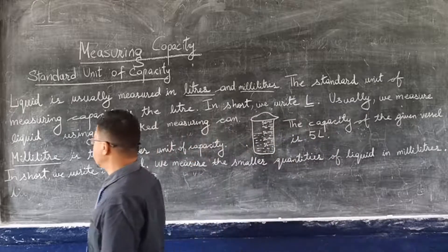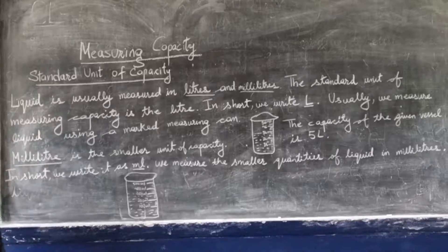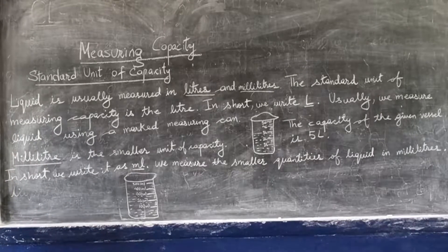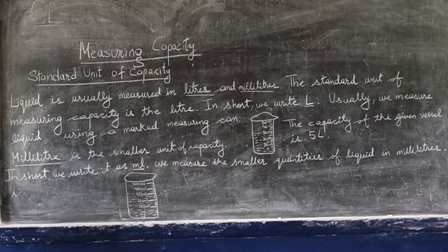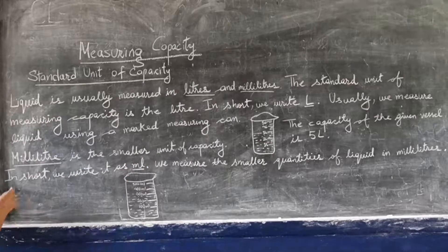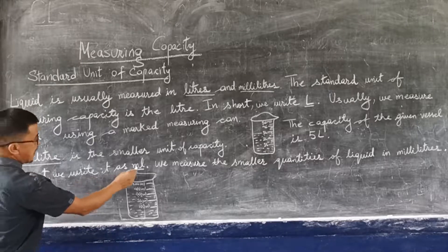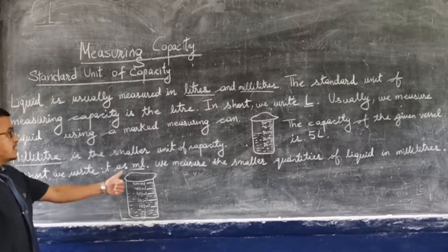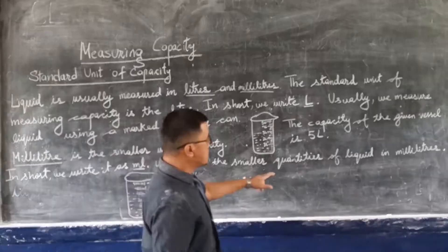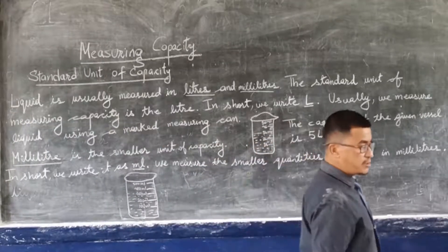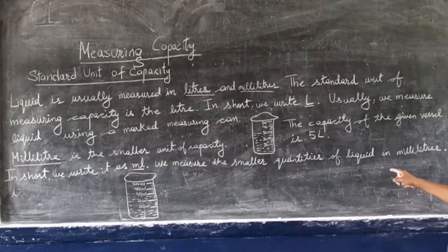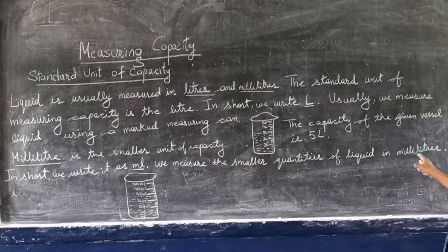Millilitres is the smaller unit of capacity. Just like grams is the smaller unit of measuring weight, millilitres is the smaller unit of capacity. In short we write it as ml. We measure the smaller quantities of liquid in millilitres.